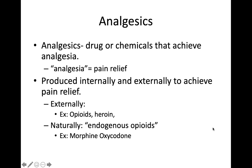This brings us to analgesics — drugs taken externally or produced internally — whose purpose is to block the pain pathway. Internal analgesics are naturally produced in your body when you're in a very good mood, which we'll discuss in the mechanism slide. External analgesics include opioids and heroin; their main goal is to block the nociceptor pathway to prevent pain signals from reaching your brain.